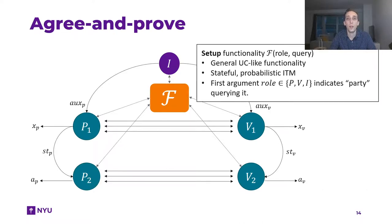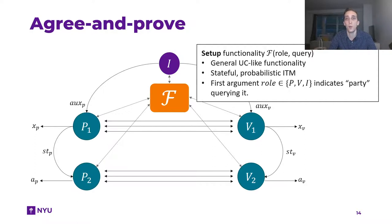The setup functionality is really some kind of general UC-like functionality — a stateful probabilistic ITM. In particular, when making a query, a party provides two arguments: the first indicates who they are. So the setup functionality knows whether it is interacting with the prover, the verifier, or the input generation algorithm, and can provide different interfaces to each of them. This means we cannot only model something like a random oracle or CRS that is the same for all parties, but also more involved setup functionalities where maybe the verifier gets additional or different information compared to the prover.